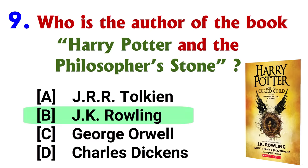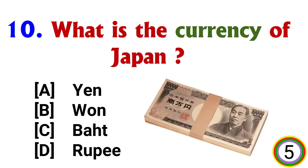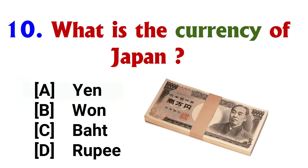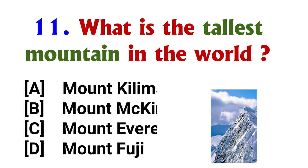Answer: option C, Jupiter. Who is the author of the book Harry Potter and the Philosopher's Stone? Answer: option B, J.K. Rowling. What is the currency of Japan?